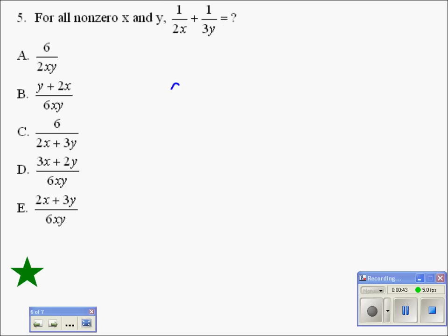2x times 3y is 6xy. So that will be our common denominator in both fractions. 6xy.